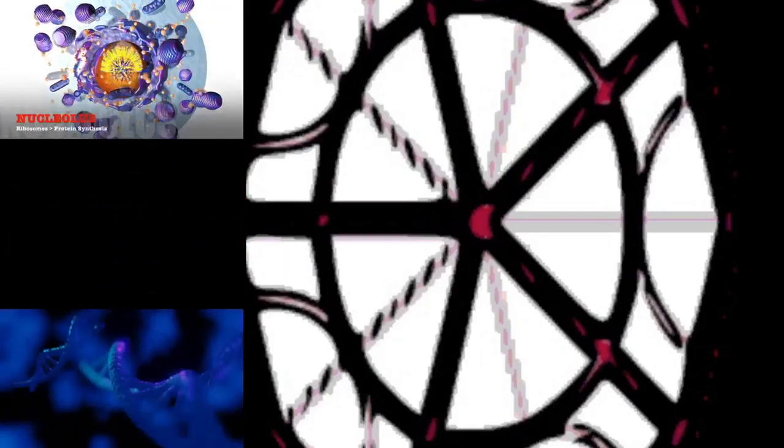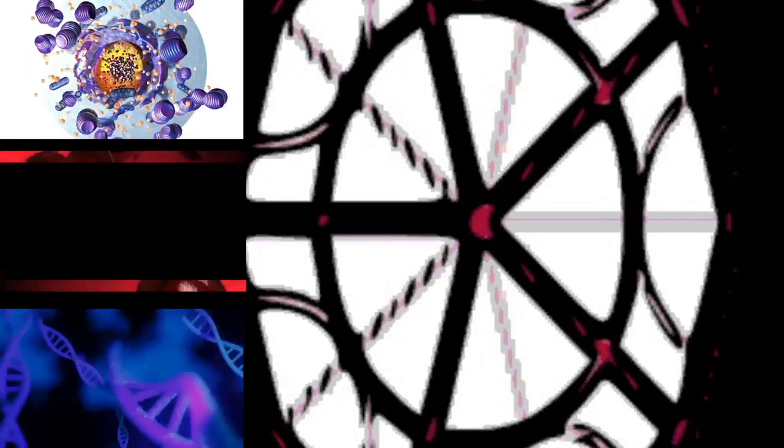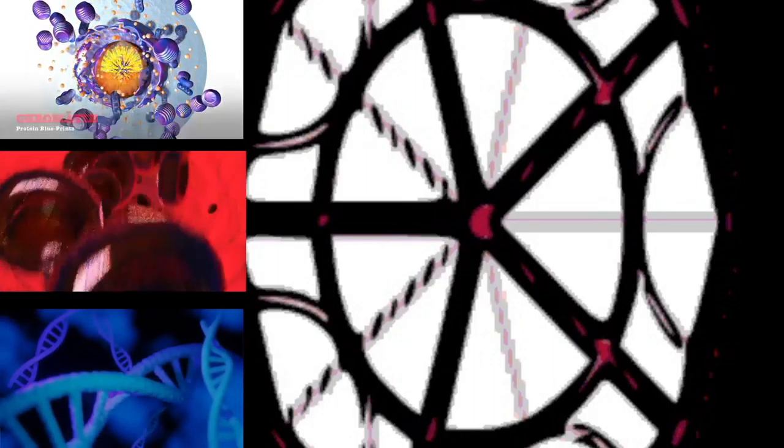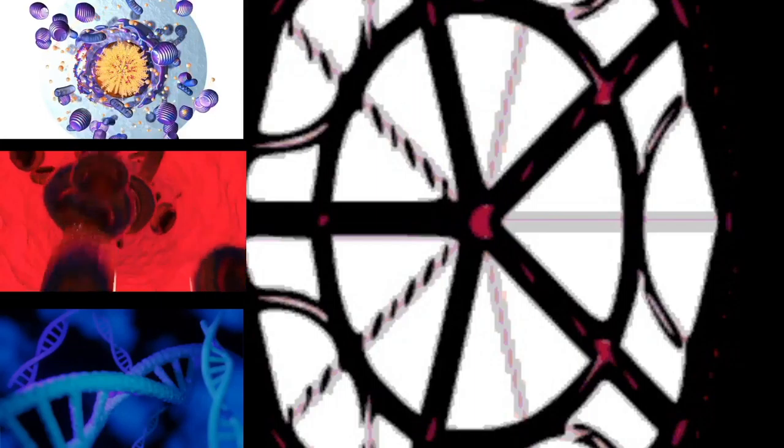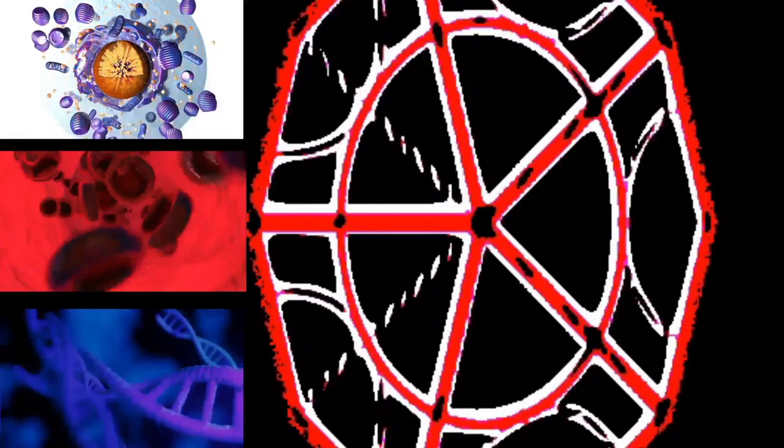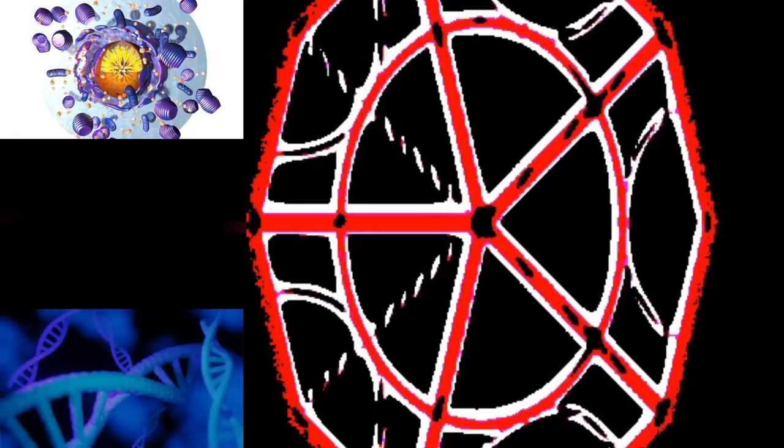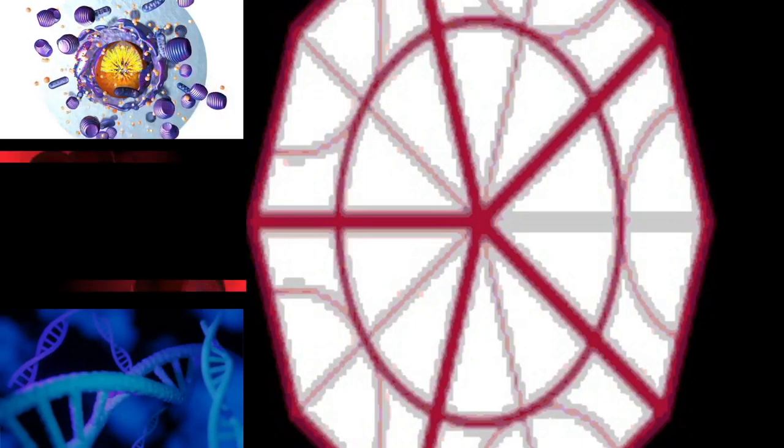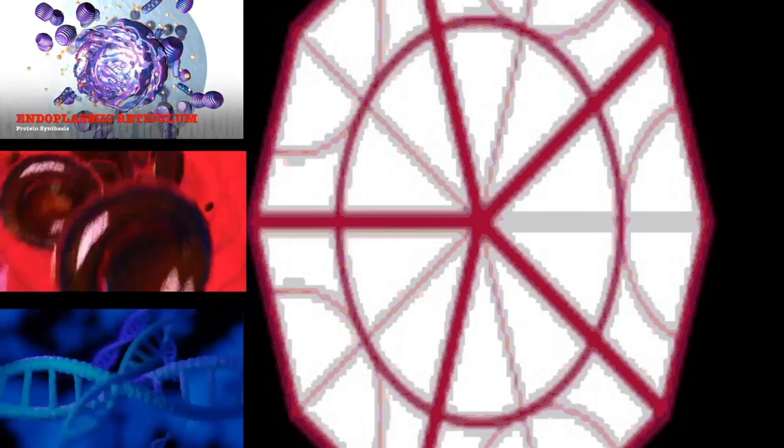Sister chromatids at this point are called daughter chromosomes. As the cell elongates, corresponding daughter chromosomes are pulled toward opposite ends of the cell and condense maximally in late anaphase. A new nuclear envelope forms around the separated daughter chromosomes, which decondense to form interphase nuclei.